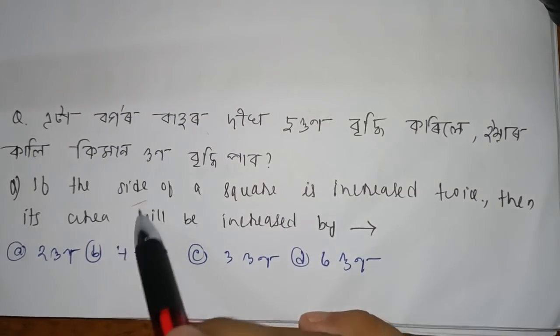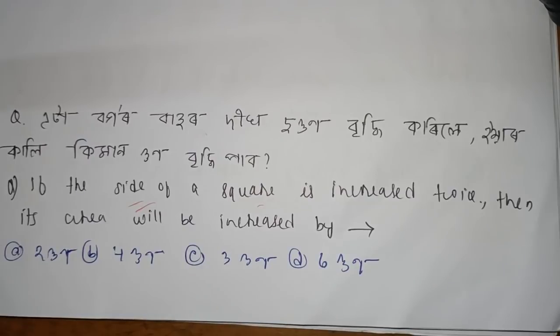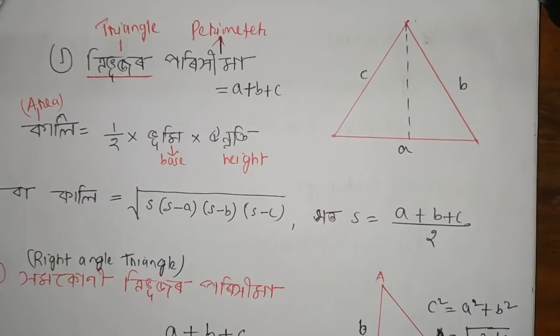If the side of the square is increased by twice, then the area is increased by a certain amount. First, the concept or the formula is discussed.